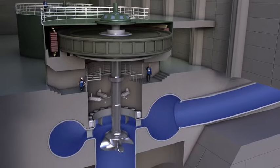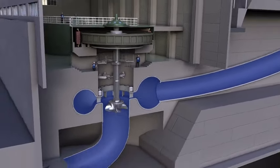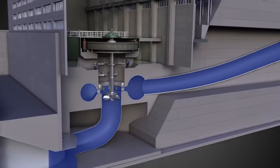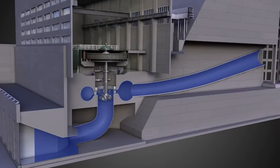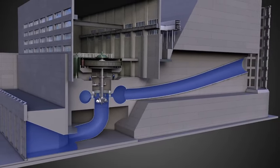When the turbine spins, it turns a metal shaft which goes up to an electrical generator. As the shaft turns, it causes the generator to rotate, producing electricity.